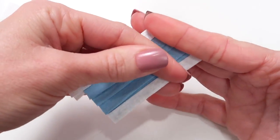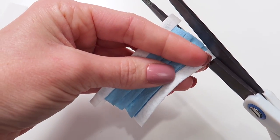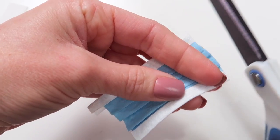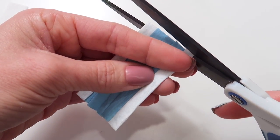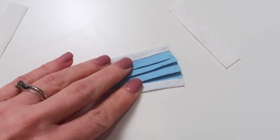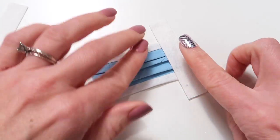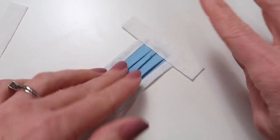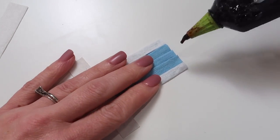Before we move on to the sides, go ahead and hold your mask and cut off the excess white paper towel. We don't need that - it will just bulk up the mask. Make sure all your folds are pressed firmly.